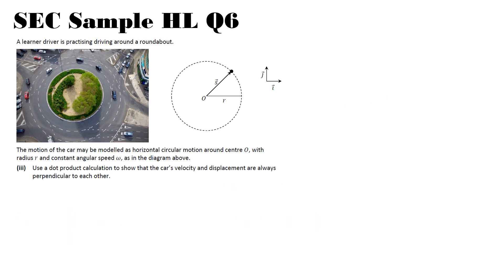So then it says, use a dot product calculation to show the car's velocity and displacement are always perpendicular to each other. So in order for these to be perpendicular, if s is perpendicular to v, then the dot product of s and v should equal 0.